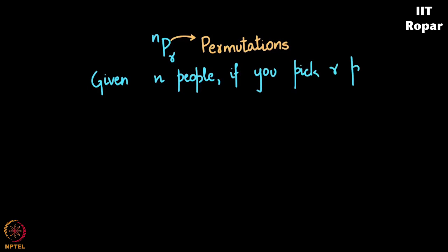What we have been seeing so far is NPR. The P there stands for permutations. So we saw that given N people, if you pick R people with order respected, you will have NPR number of choices.